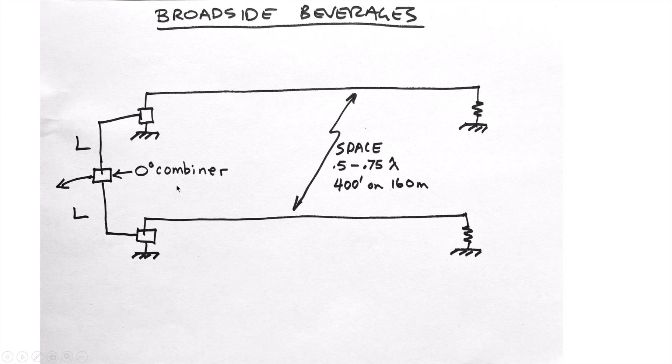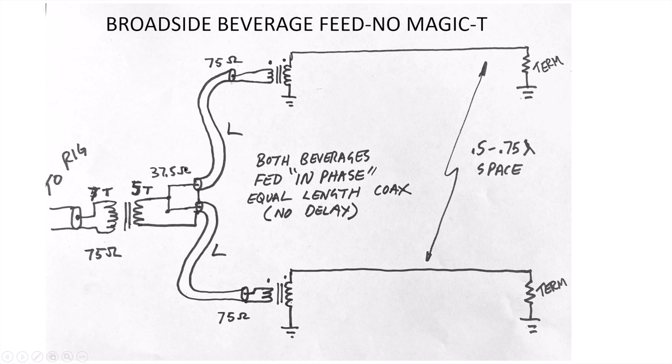In this case I'm showing a broadside phased pair of beverages, usually spaced one-half to three-quarters of a wavelength apart and fed with equal length coax to a central point where we combine them in phase. Each feed line has to be exactly the same length so that both beverages are in phase. We could just connect both feed lines together in parallel, perhaps hardwired inside a box or using a mechanical T connection.